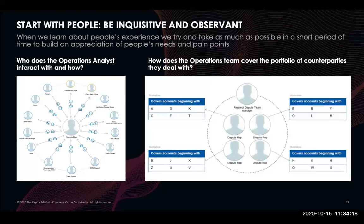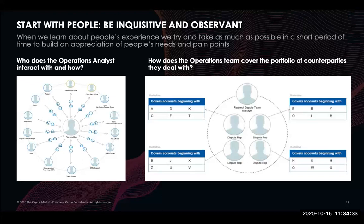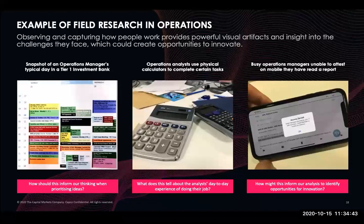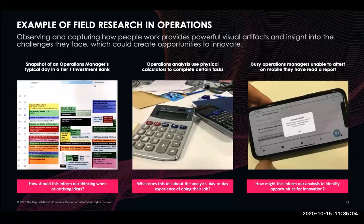When I do empathy building and user research, you have to be inquisitive and observant — who does the operations analyst interact with and how? I just sketched this; it's not a template, not something from a playbook. This is just how myself and the team started building an understanding of who that person interacts with. We then looked at how the team covers different counterparties, and were quite surprised — shocked, actually — to realize they were dividing it alphabetically, which definitely raised a lot of questions.